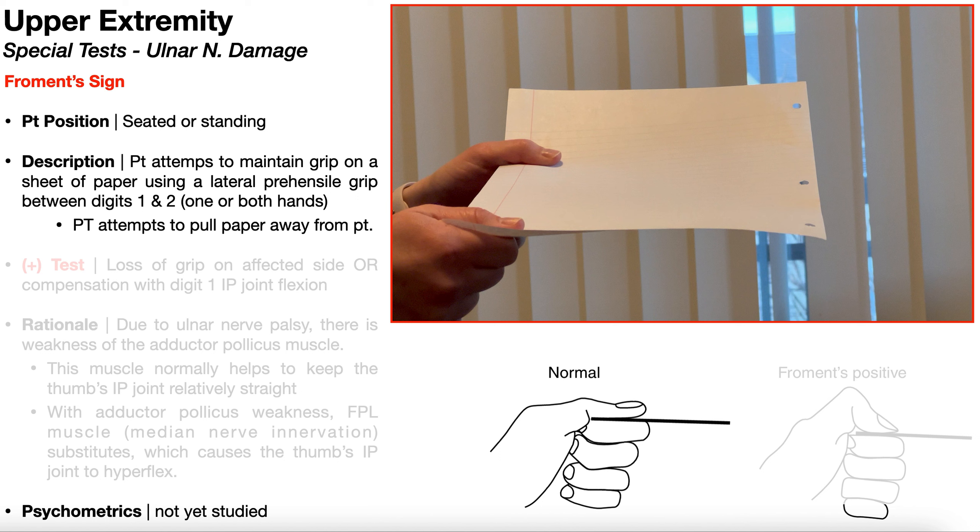In this video, we're going to be looking at Froment's sign, which is a special test used in the diagnosis of ulnar nerve palsy.